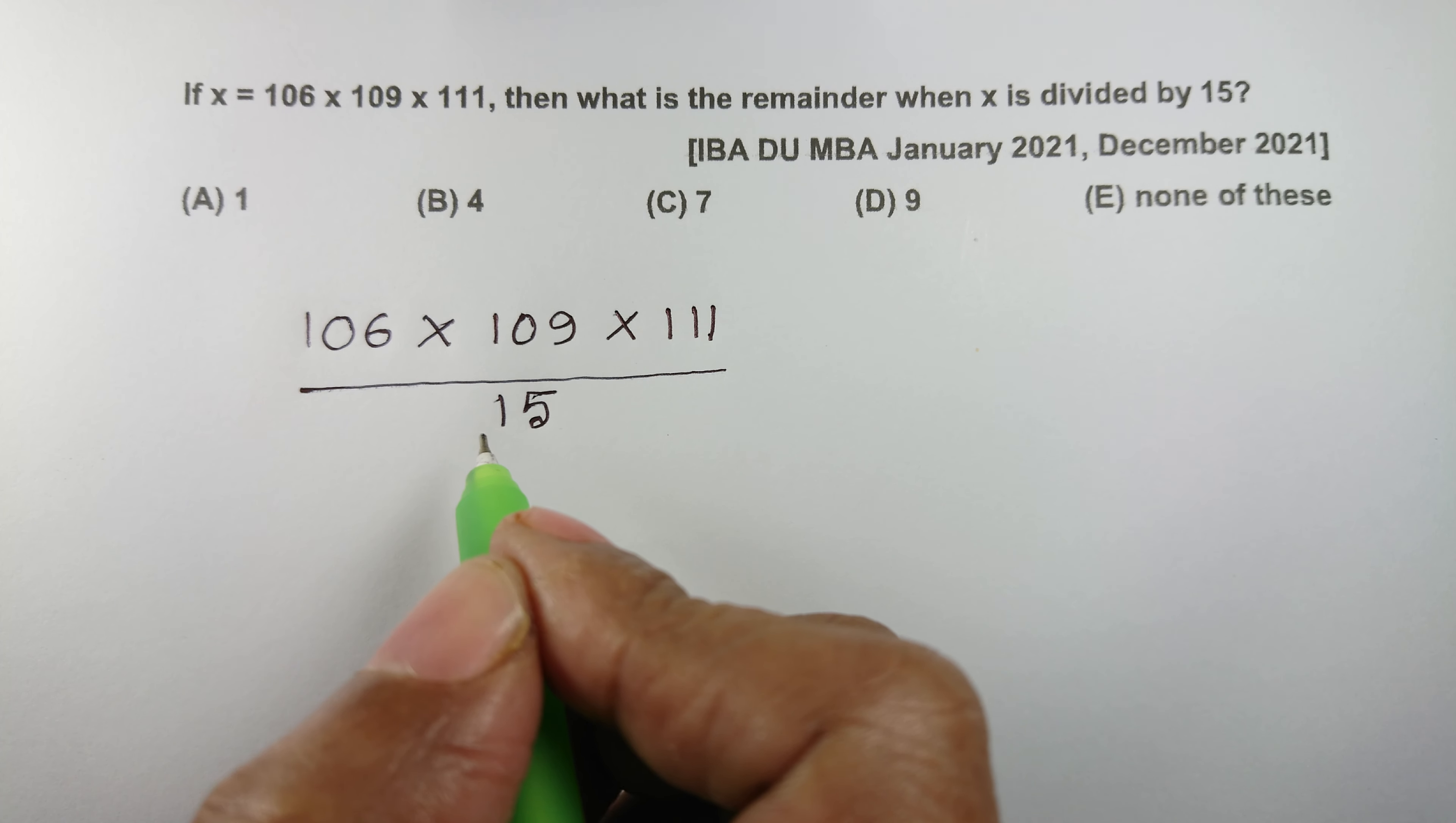અલગ અલગ 15 થી ડિવાઇડ કરીએ જે રિમાઇન્ડર થશે જે 3 રિમાઇન્ડર થશે તે 3 રિમાઇન્ડર ભાગ સાથે ગુણ કરી